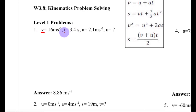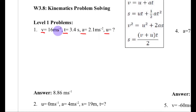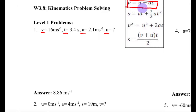Here I have V, T, A, and U, so I need an equation that has only these variables and nothing else. Looking at my equations list, I can see that this is the only equation that has V, U, A, and T and nothing else, so that's the equation I'm going to use.